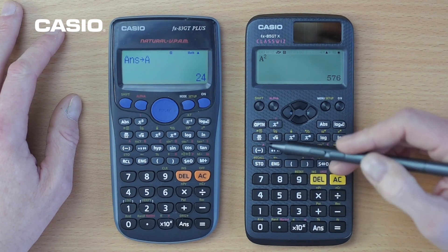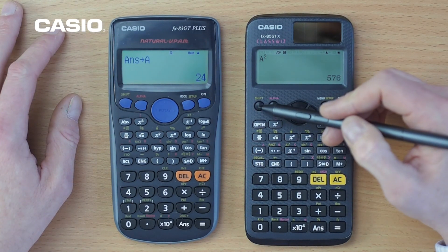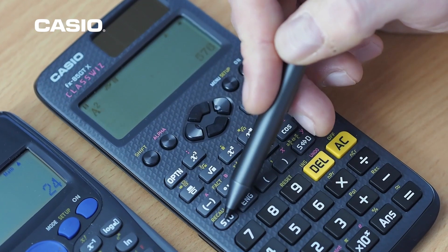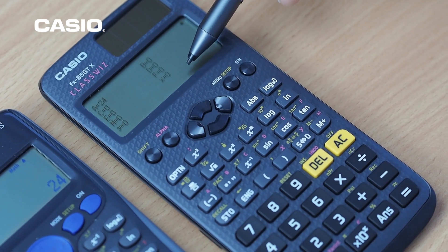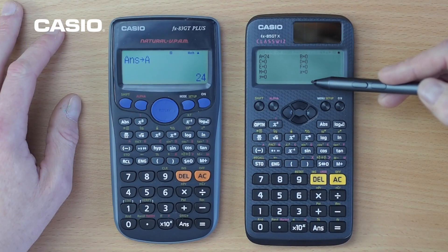Or we can look at the recall function, which has been redesigned and improved. So if we do shift and recall, there's now a summary with a four times higher resolution of all the values that are actually stored in the calculator itself.